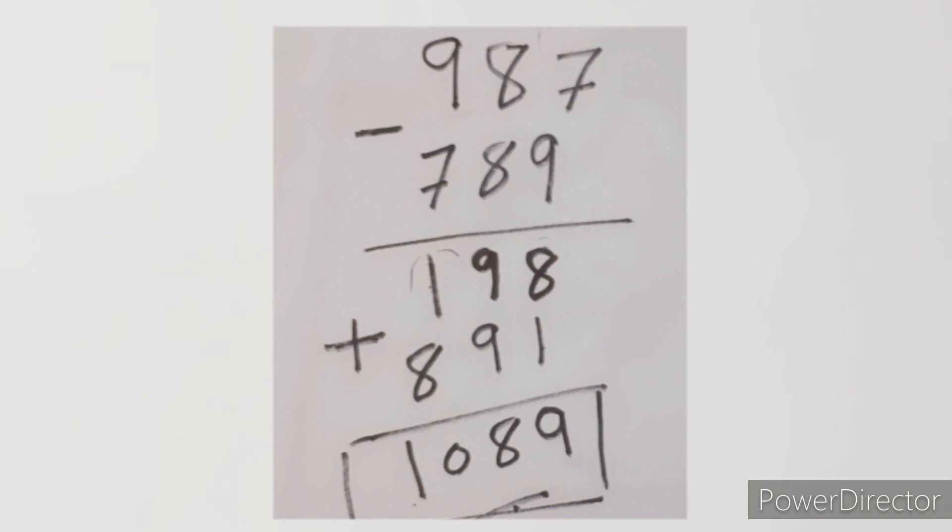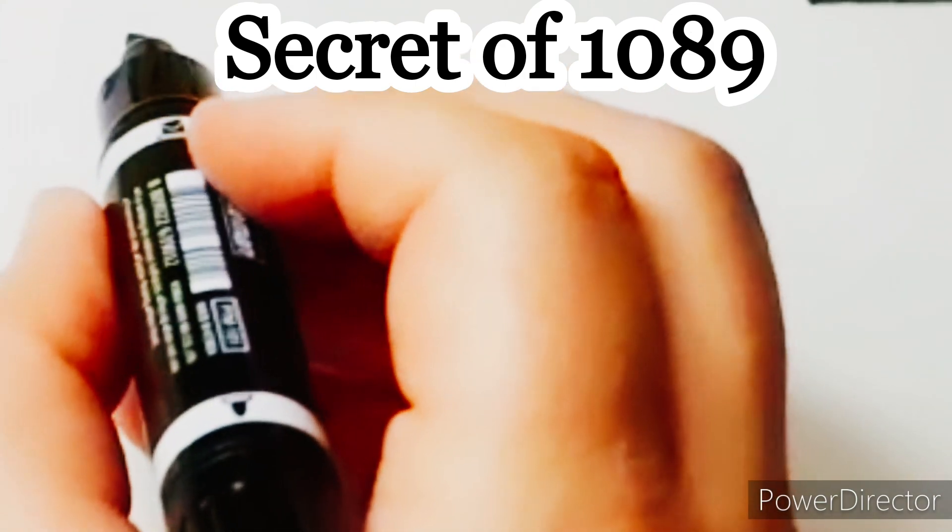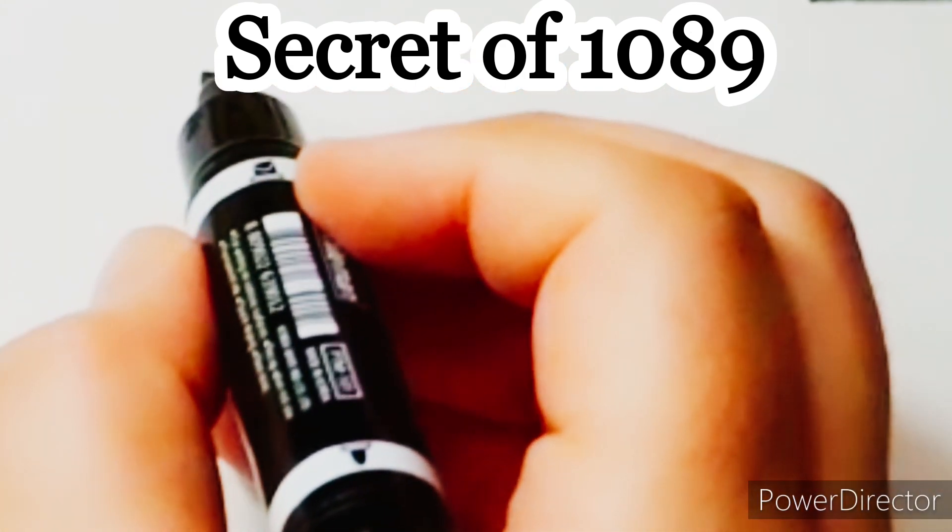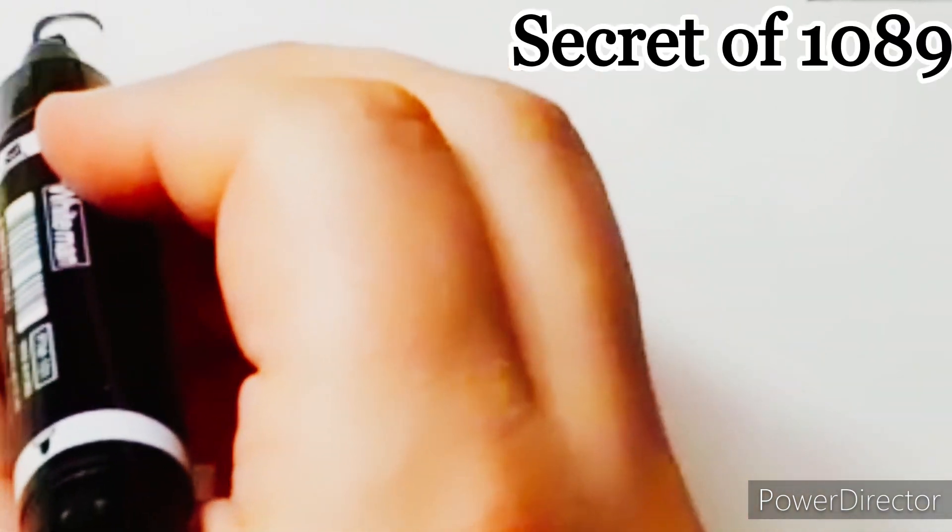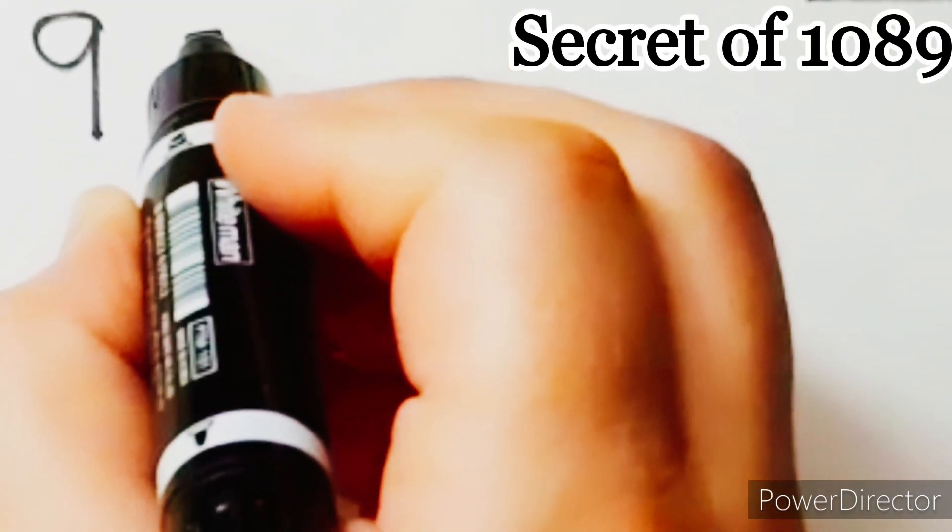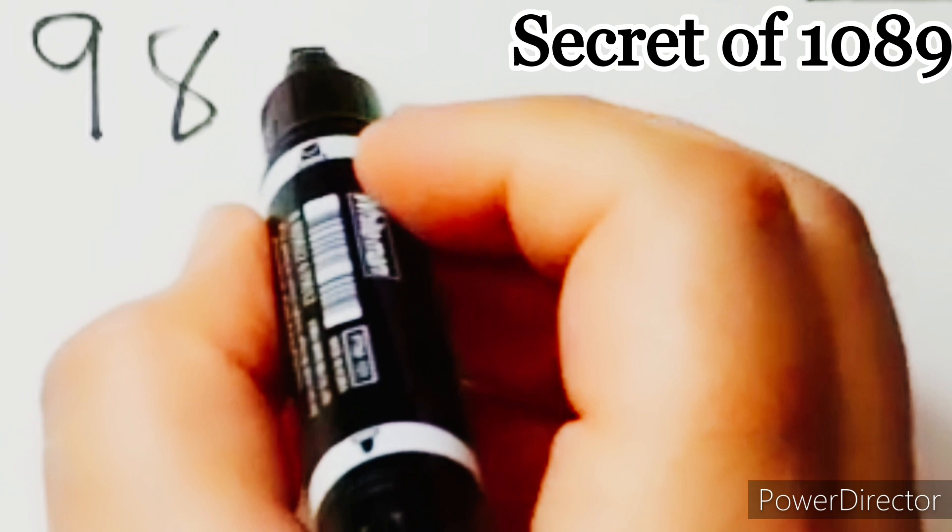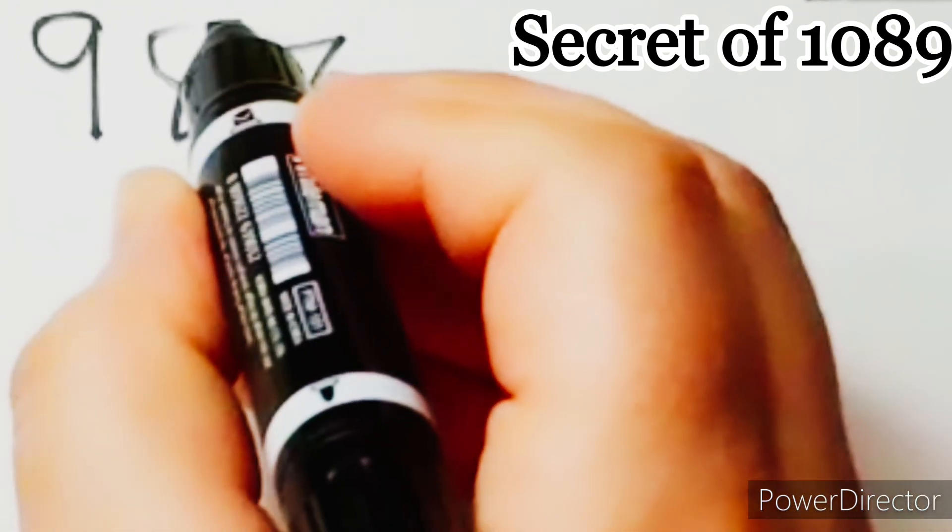The result in each time is a fixed number which is 1089. Okay, let's go. For example, if we write any number consists of three digits, such as 987.